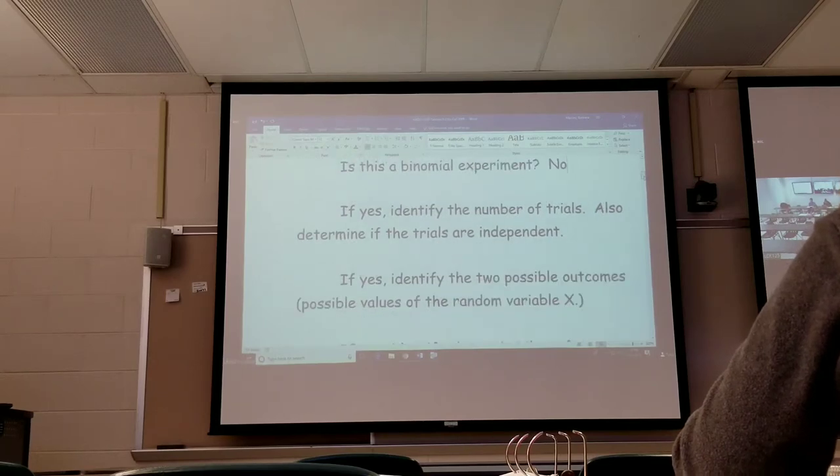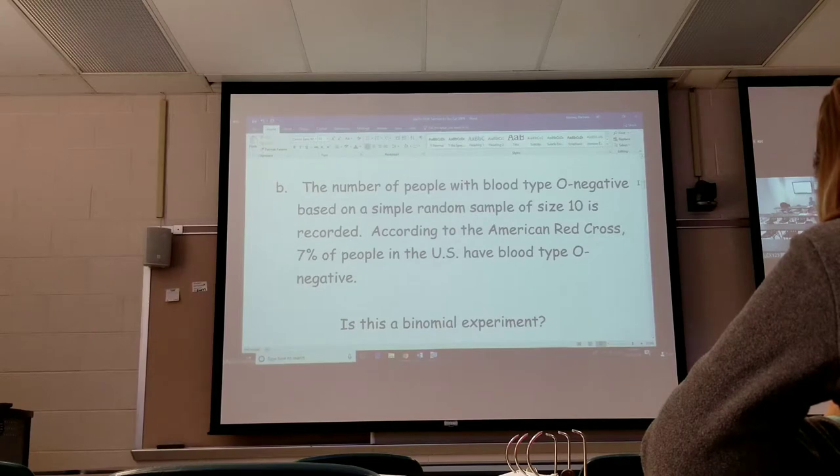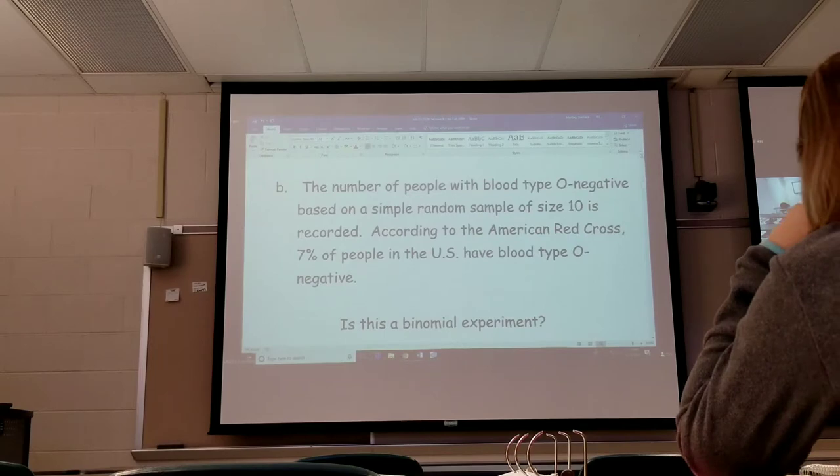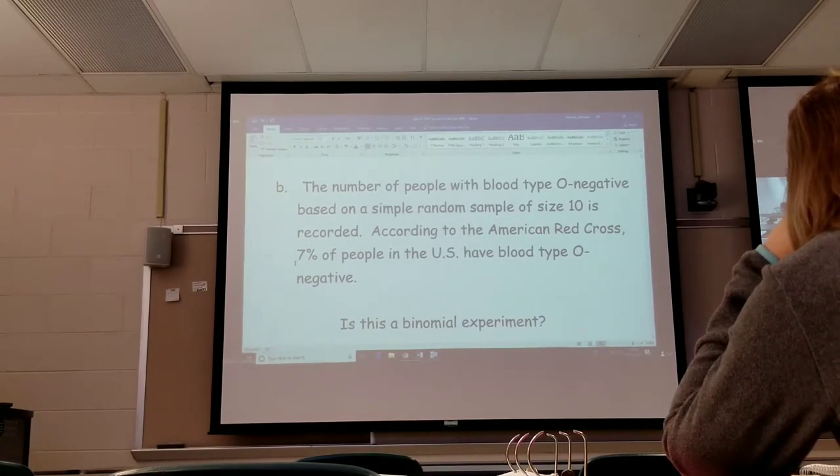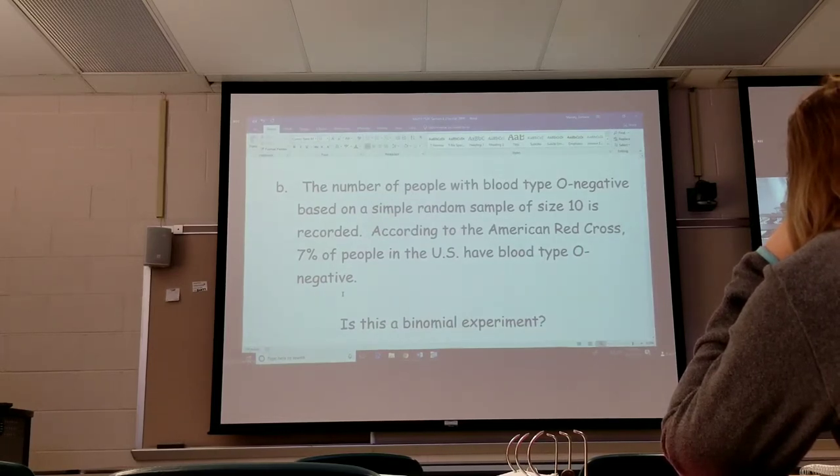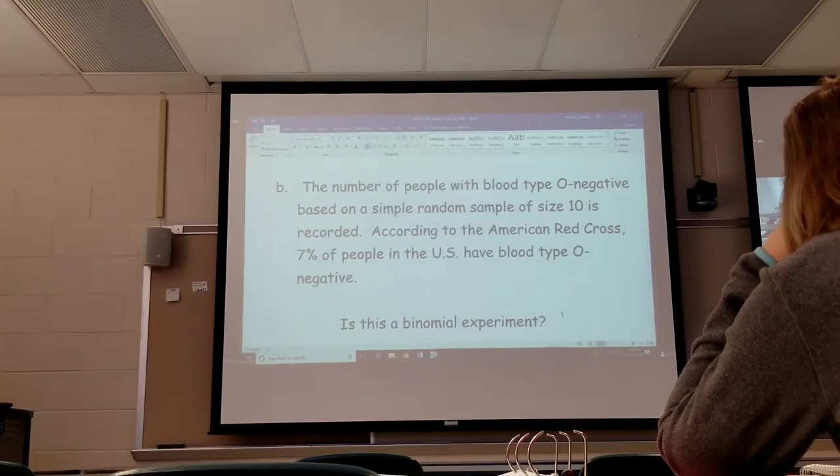This one should be the number of people with blood type O-negative based on a simple random sample of size 10 is reported. According to the American Red Cross, 7% of the people have blood type O-negative. This one is binomial because they're being pretty distinct, either O-negative or not. If they had said just record the blood type, it changes the whole thing. But they want to know O-negative, not O-negative. This one is a yes.